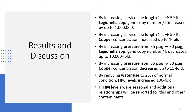Key takeaways: increasing the service line length from one foot to 50 feet increased Legionella gene copy number per liter by up to one million, and increased copper concentration up to fourfold. Increasing pressure from 35 psi to 80 psi decreased Legionella gene copy number per liter by up to 10,000-fold and decreased copper concentration up to 15-fold. Reducing water use to 25 percent of normal conditions increased HPC levels 100-fold. TTHM levels were seasonal, and additional relationships will be reported for this and other contaminants in the manuscript.